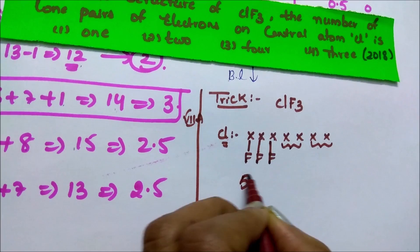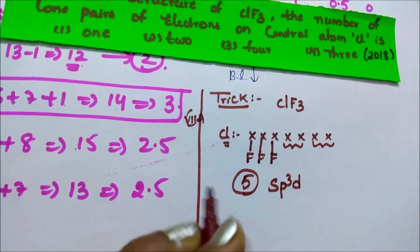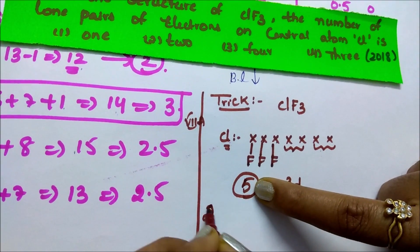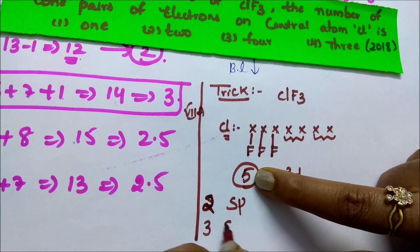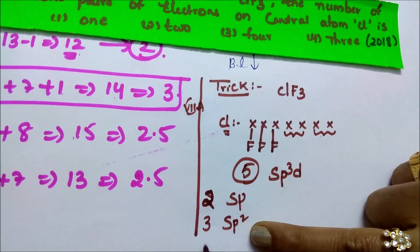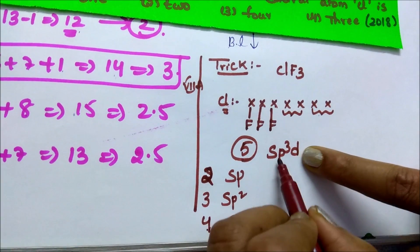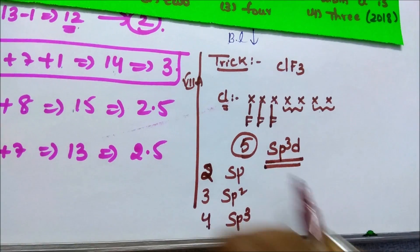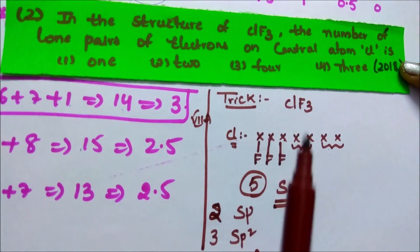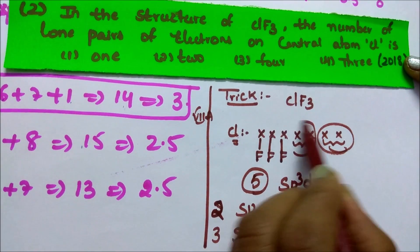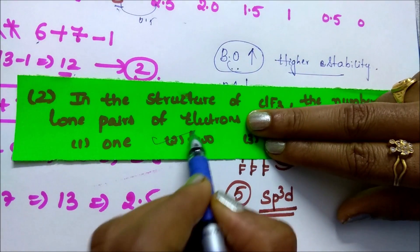If the total is 5, the hybridization is SP3D. For reference: 2 means SP, 3 means SP2, 4 means SP3, 5 means SP3D. But in this question, they are asking the number of lone pairs. The lone pairs remaining are 2. So the answer is 2 lone pairs.